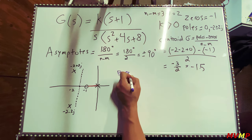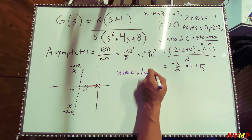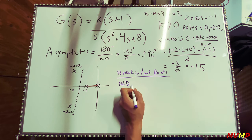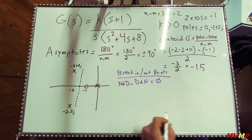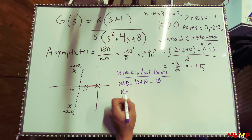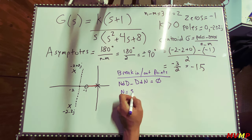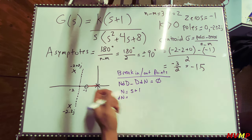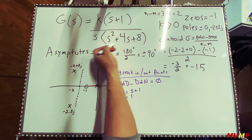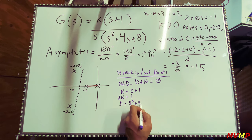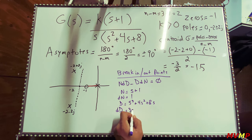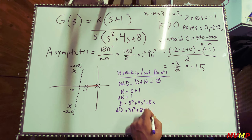Now we solve for break-in/breakout points using the formula: numerator times derivative of denominator minus denominator times derivative of numerator, set equal to zero. The numerator is s plus one, and its derivative is one. The denominator is s cubed plus 4s squared plus 8s, and its derivative is 3s squared plus 8s plus 8.